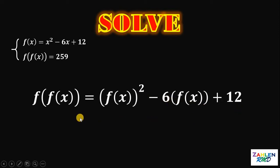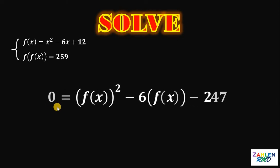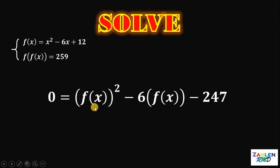Now, we know the value of f of f of x — this is equivalent to 259 — so we can substitute 259 to f of f of x. Let's subtract 259 on both sides. So we have 0 equals f of x squared minus 6 times f of x minus 247.